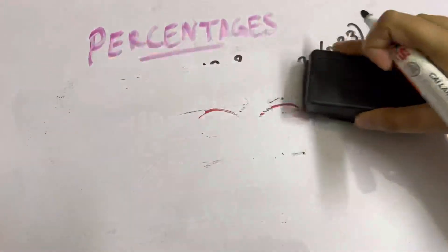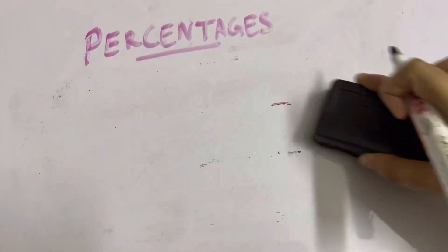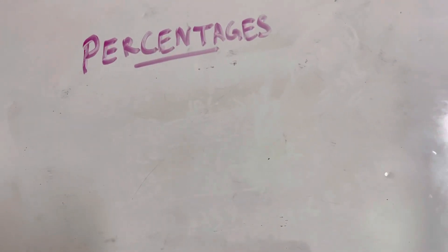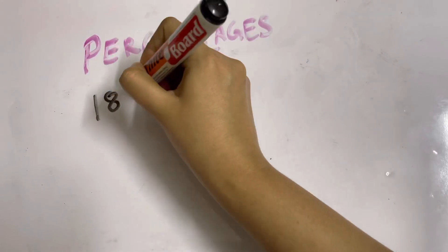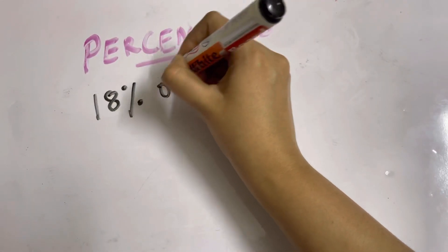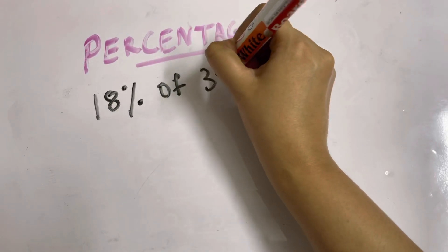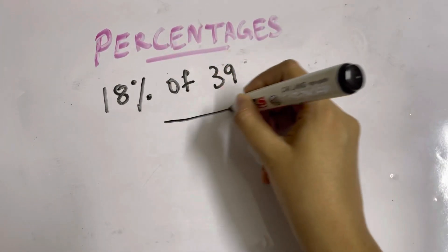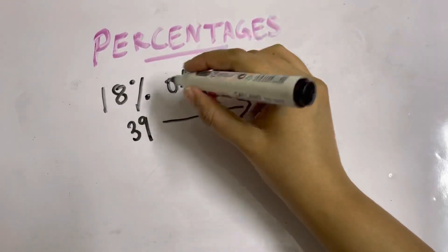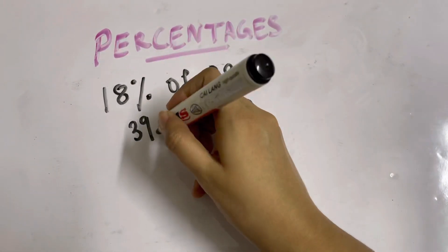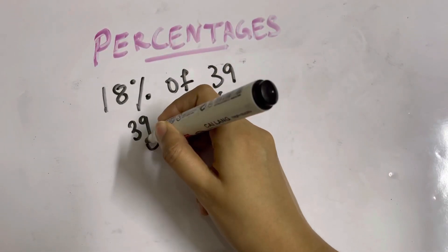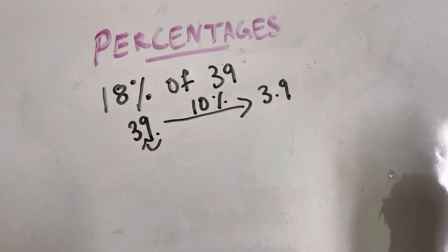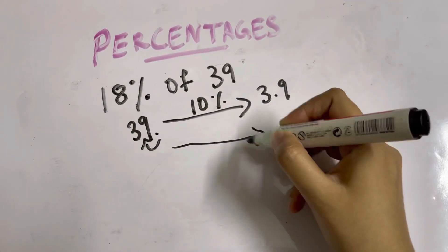We're learning to calculate percentages mentally and you're becoming an expert. Let's find out 18% of 39 — it looks tough but it will be easy. First, find 10% of 39: place the decimal and move one slot towards the left, giving 3.9.